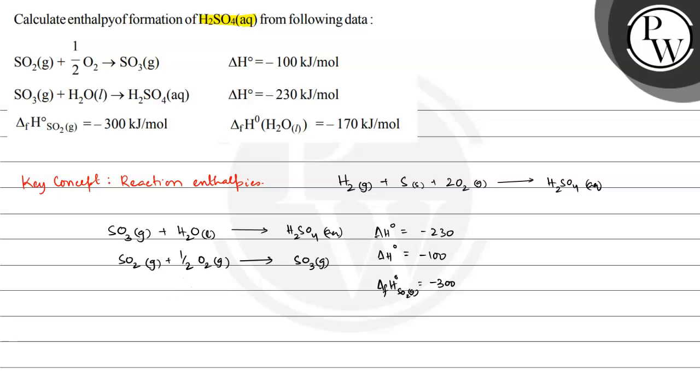For formation of sulfur dioxide we have sulfur plus O2 gas giving SO2 gas.